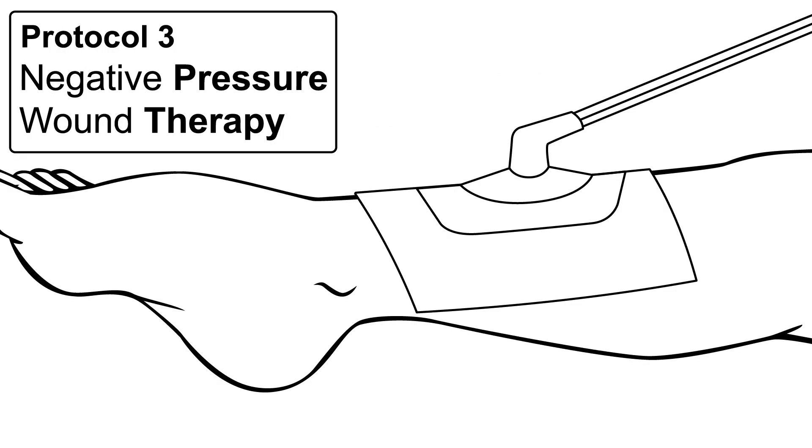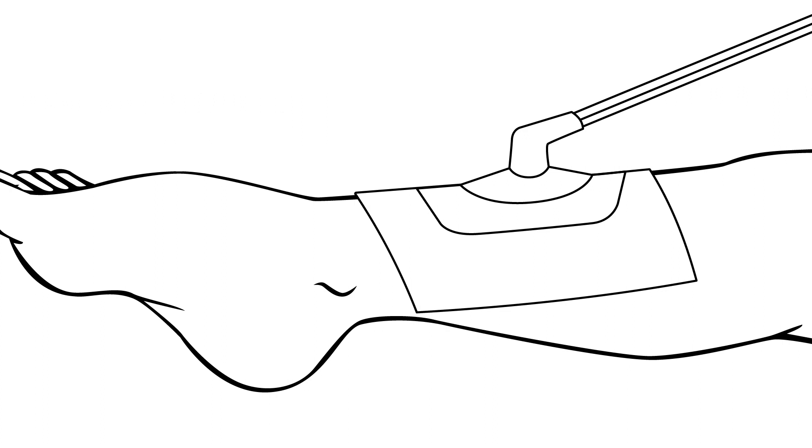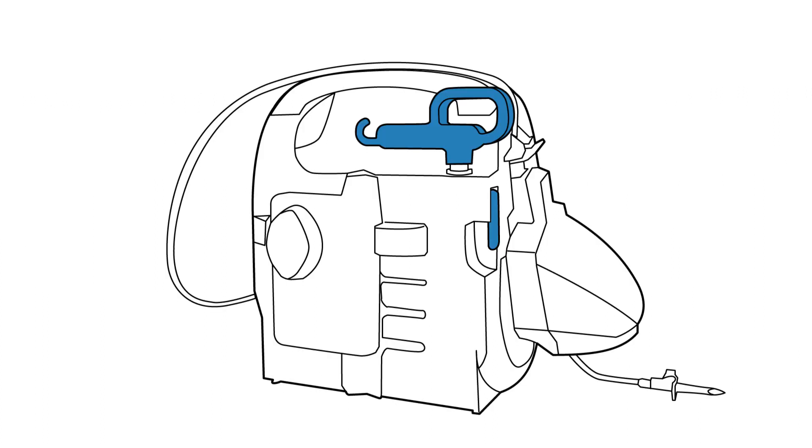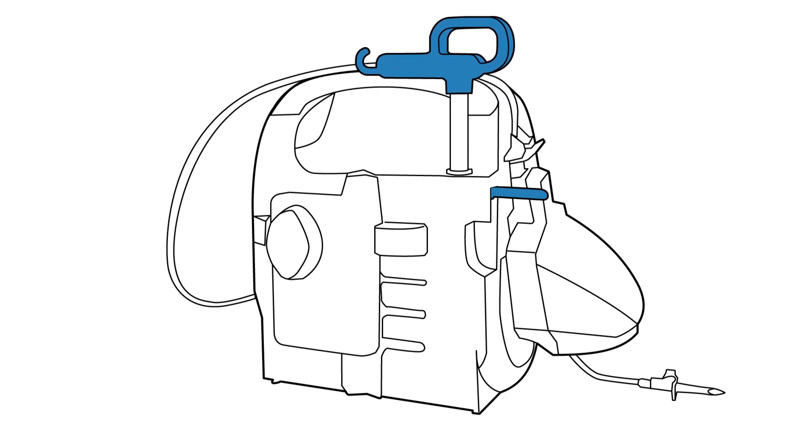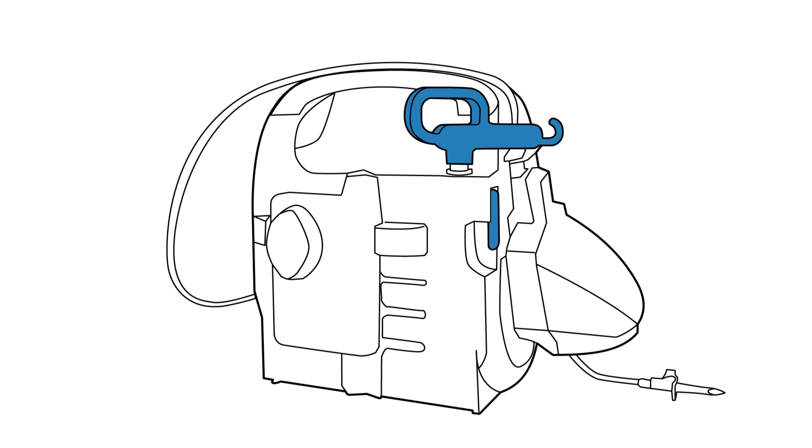Vosh can be used with negative pressure wound therapy as the installation fluid. Use the provided hang tab, fold it out and hang on device arm by raising and rotating the arm 180 degrees. Lock into place.